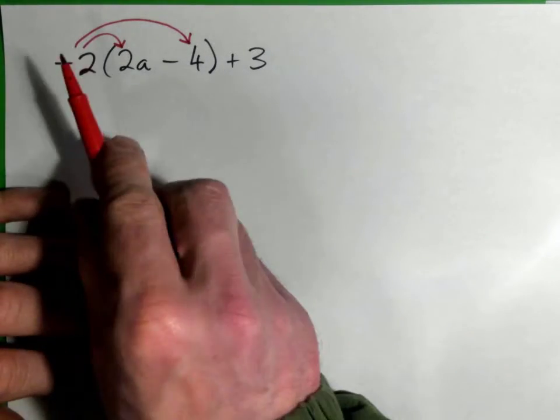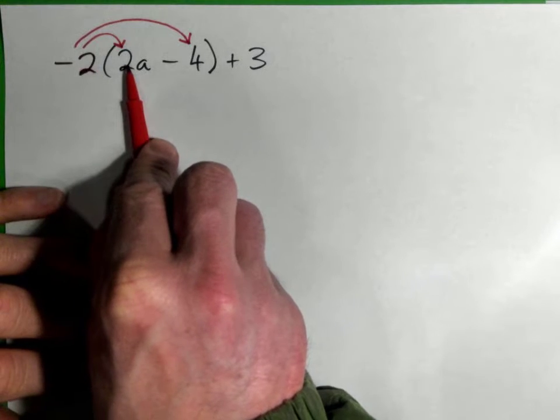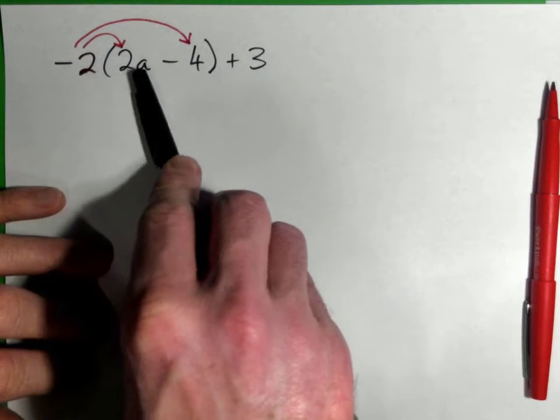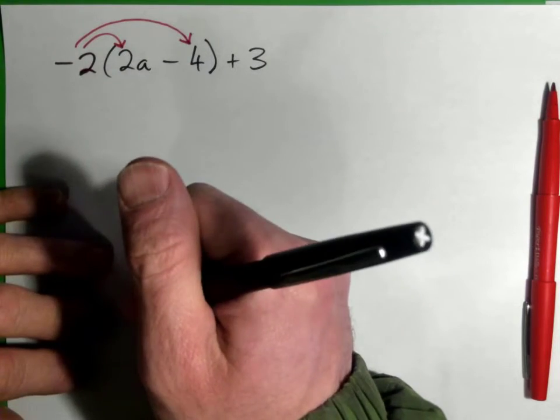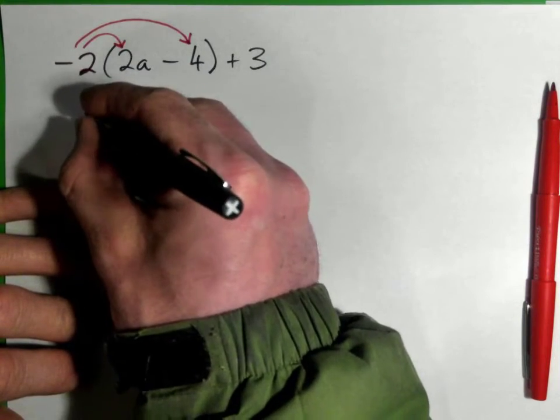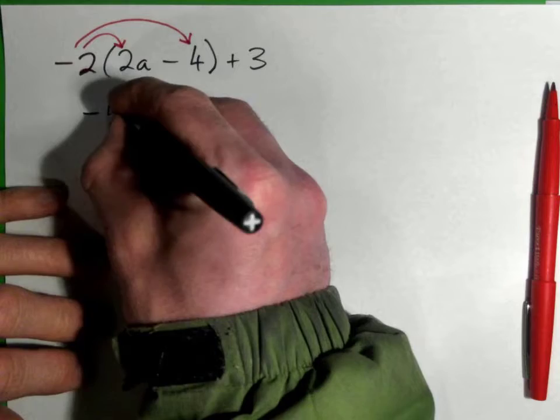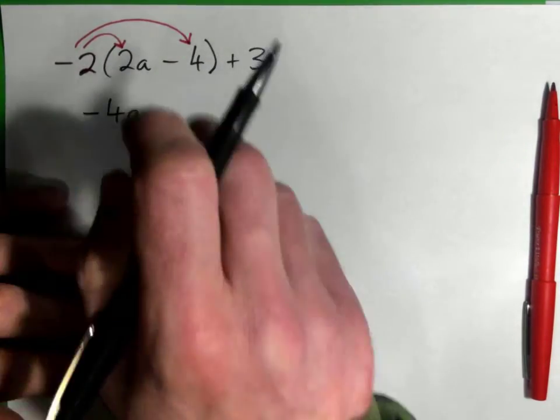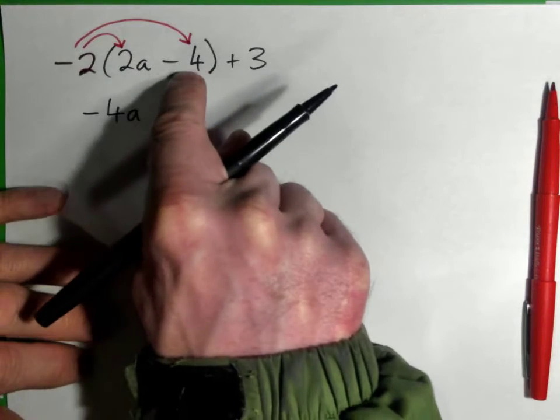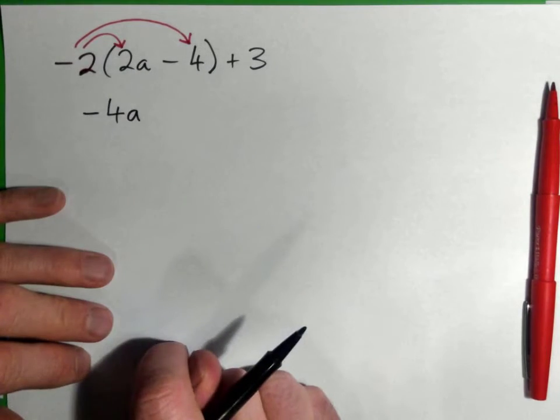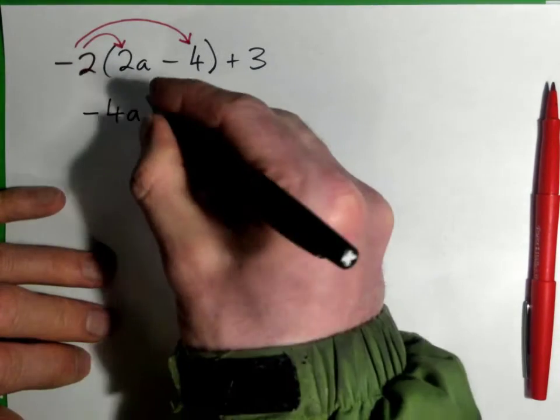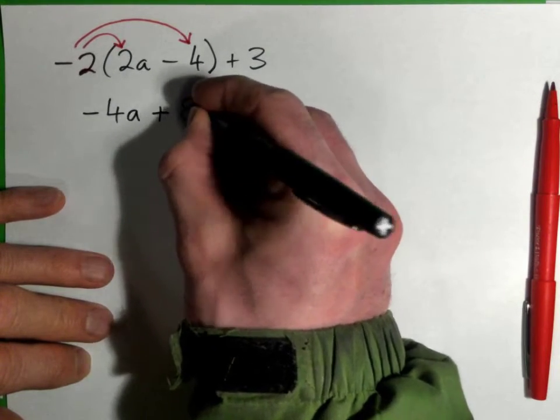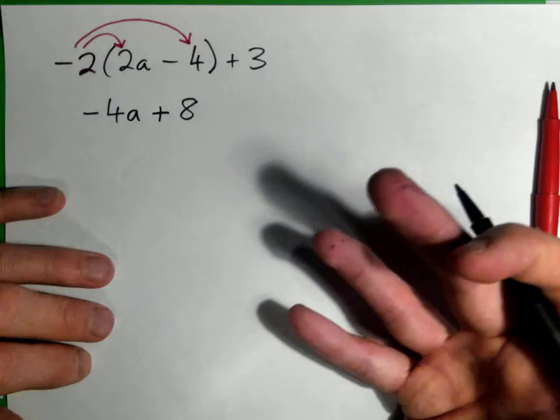The first thing we're going to do is take that negative 2 and multiply it by each term. What's negative 2 times 2a? Yes, 2 times 2 is 4, but it's negative, and you still have the a, so it's negative 4a. Good. What's negative 2 times negative 4? Yes, it is positive 8. You must put down the plus sign: plus 8. Now we've gotten rid of the parentheses.